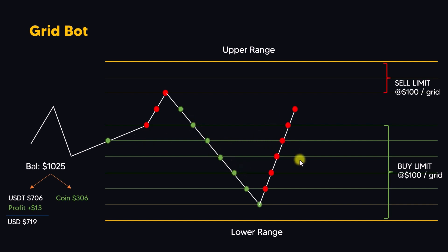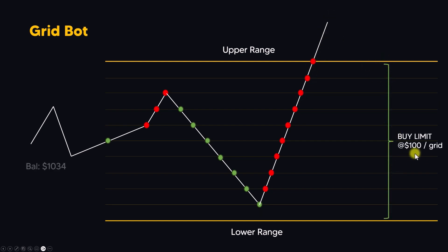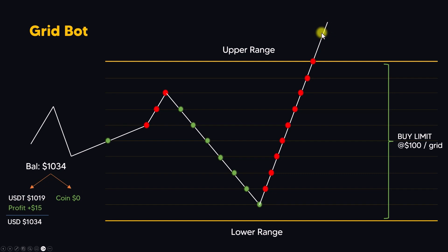The bot will make buy and sell orders as long as the price movement is within the upper and lower range. What happens when the price goes beyond the upper range? The bot will sell all the coins it has. All grids are then filled with buy limit orders and the balance becomes all USDT with zero coins, because everything was sold when price went beyond the upper limit. The bot will then do nothing, and you'll get a notification saying the price is above the range.